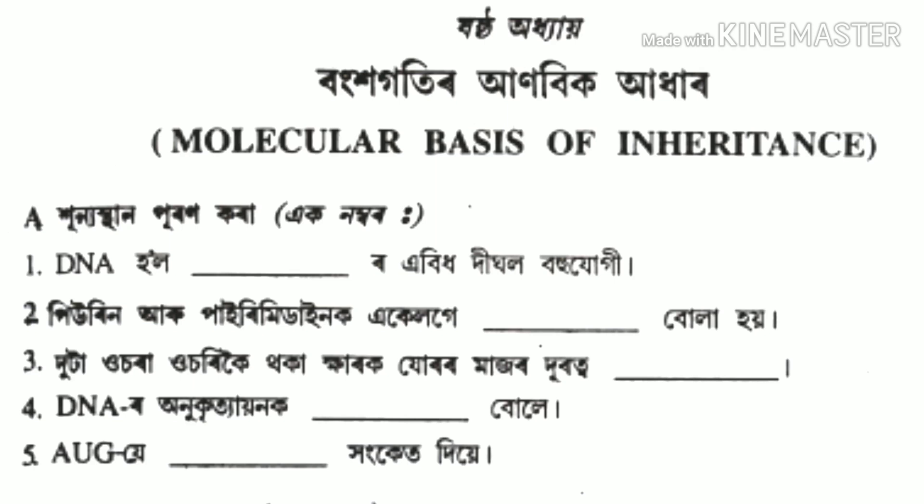Chapter 6: Molecular Basis of Inheritance. The first question is: DNA is a long polymer of dash (fill in the blank).